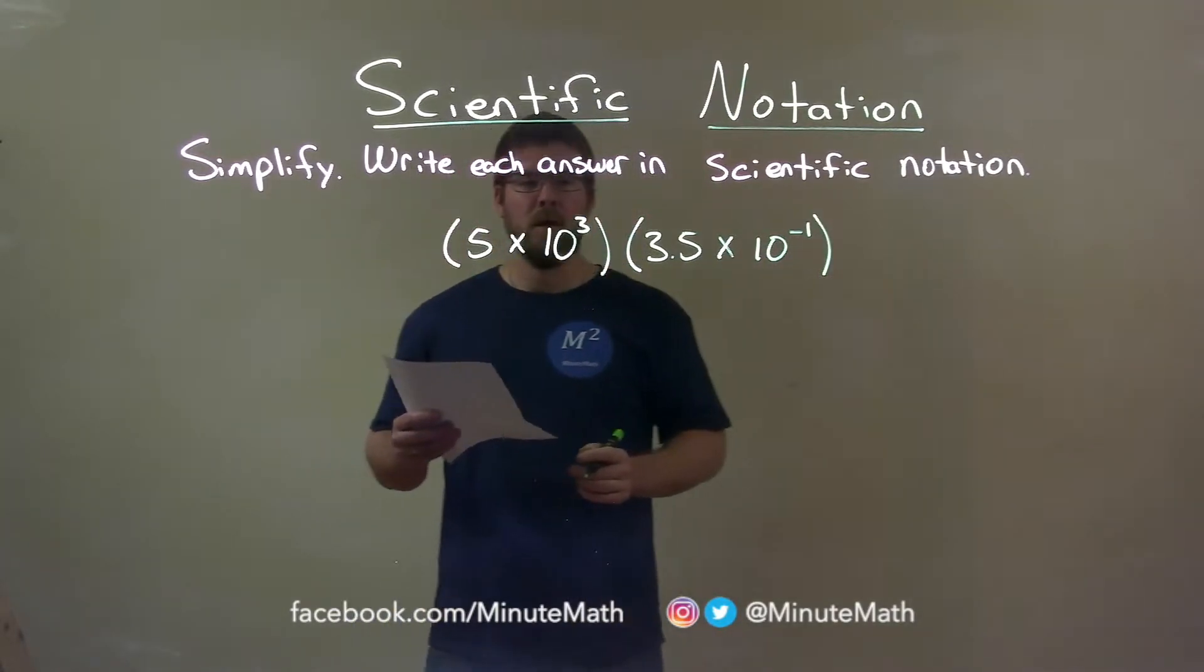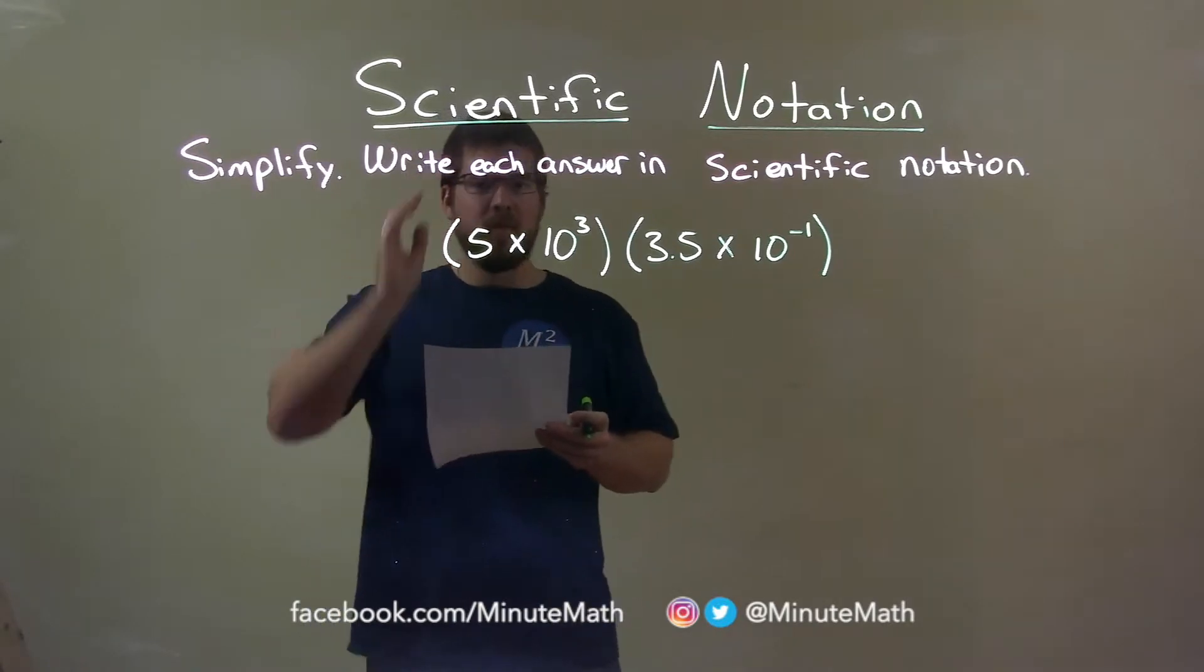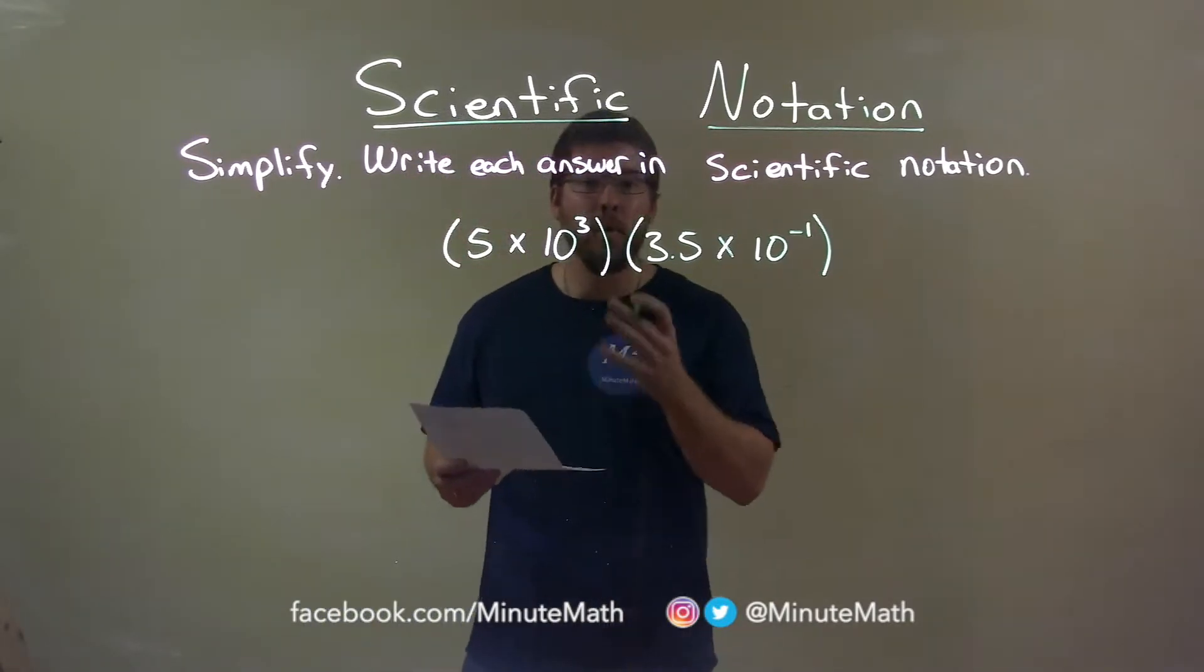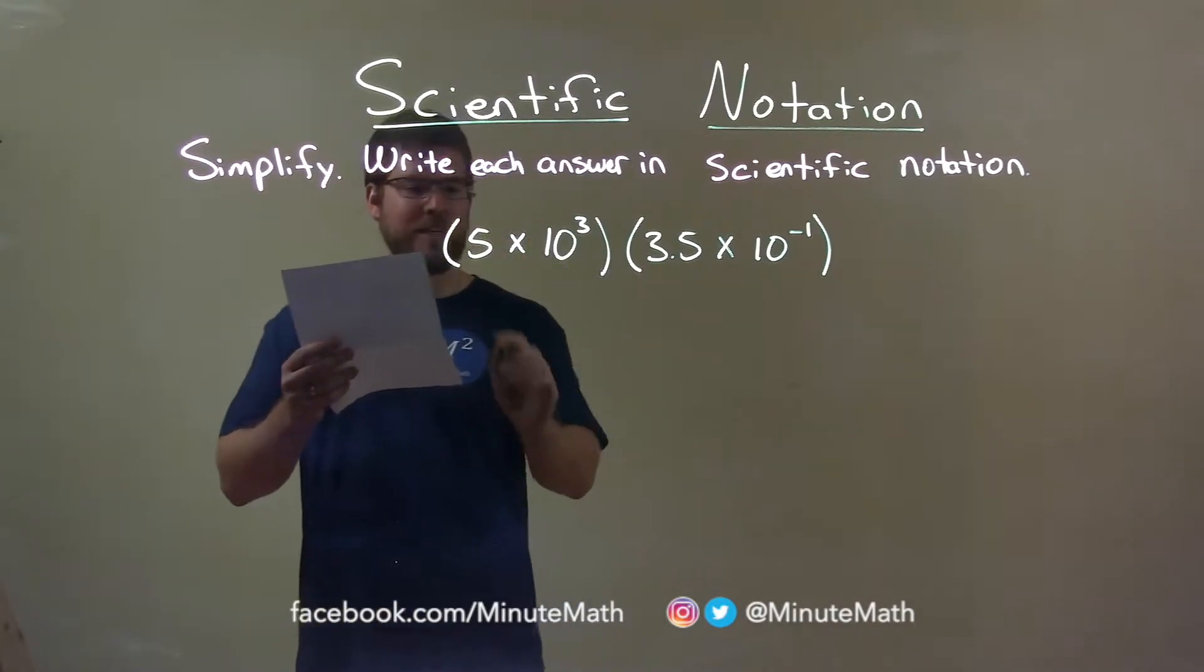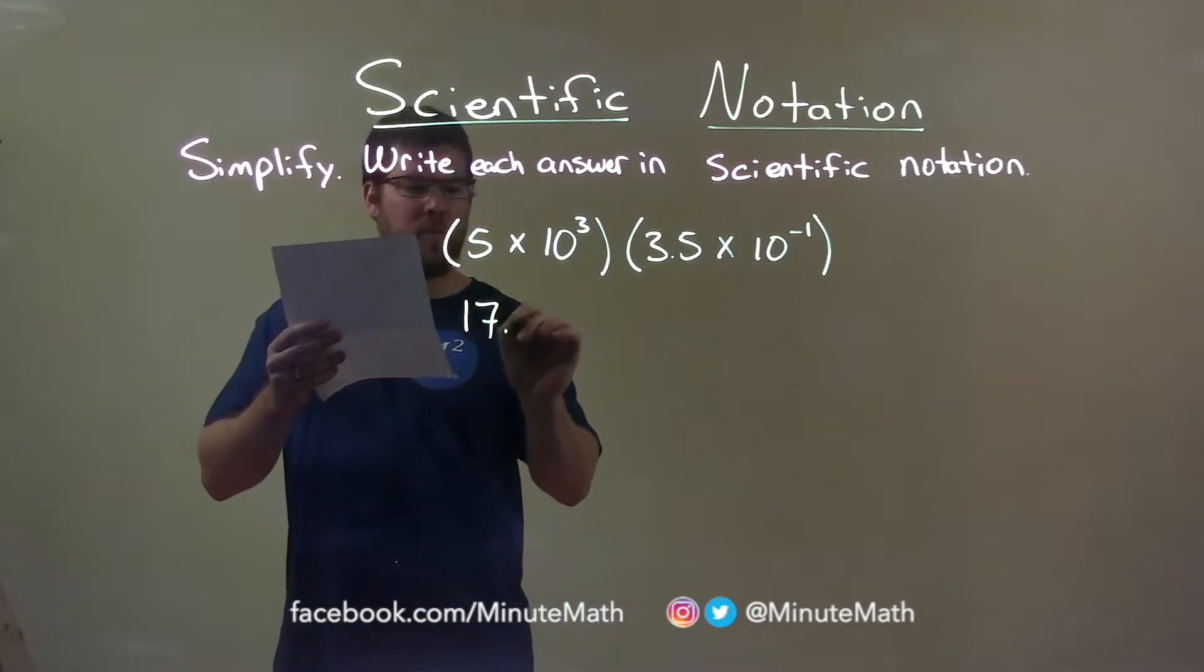Okay, well, what I want to do first here is I'm going to take the 5 and 3.5 and multiply those two together. 5 times 3.5 is 17.5.